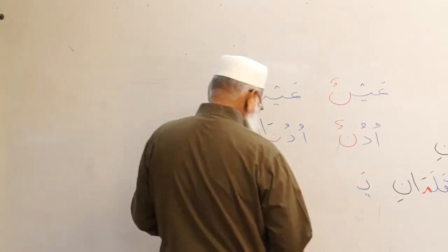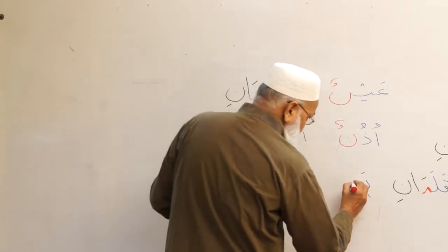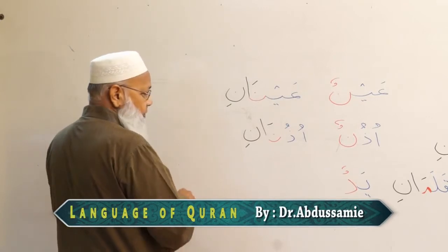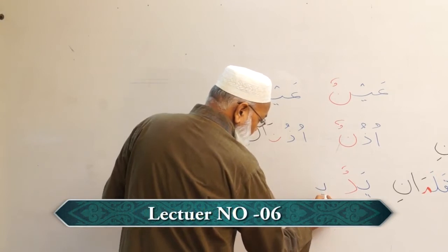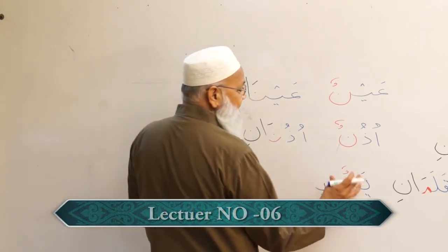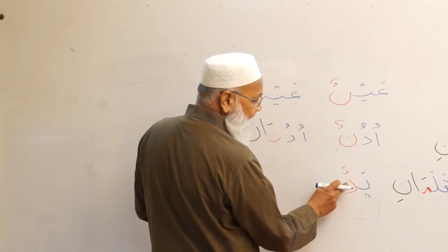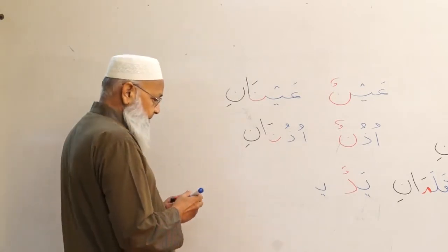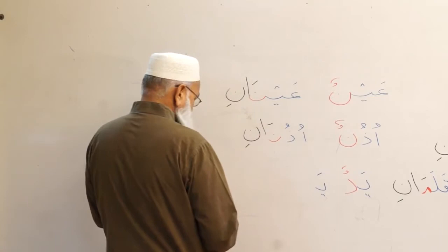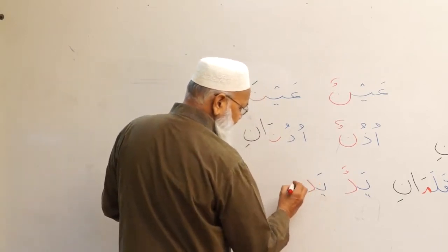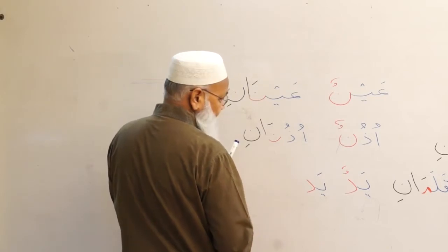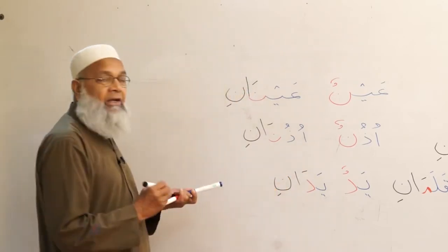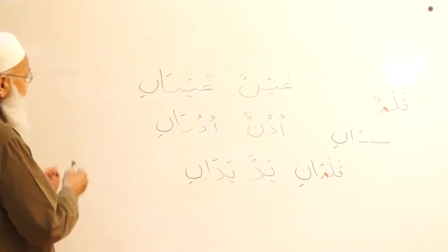Then yadun — a hand. This word comprises only two letters: ya and dal. The dal is the last letter in red, and ya before it is in blue. The dal's harkat changes to fatha, followed by alif and noon with kasra, giving yadani — two hands in the rafa form.